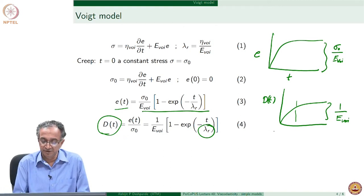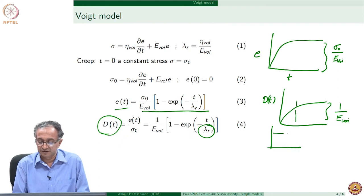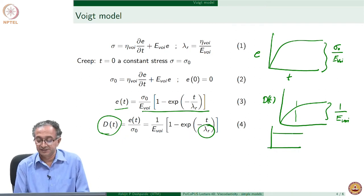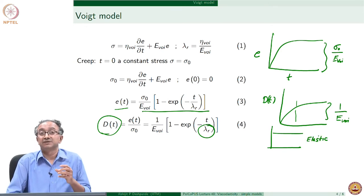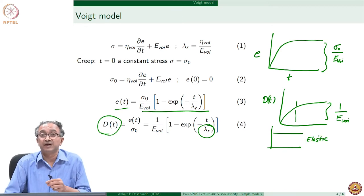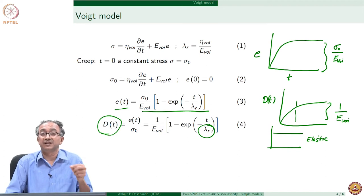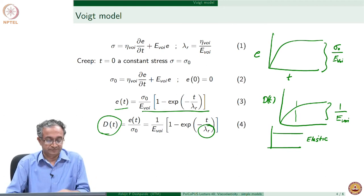For a Hookean elastic material, the strain increase is instantaneous and immediately becomes constant. You can rationalize the value of λ_r to check whether you get the terminal elastic response or terminal viscous response in limiting cases.